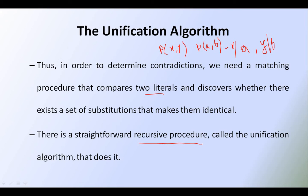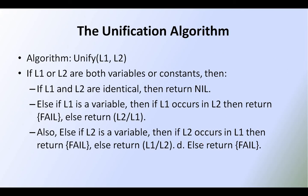This is the introduction of the unification algorithm. Now let us see how this algorithm works. The algorithm unifies two literals L1 and L2. Taking P of X comma Y as L1 and Q of X comma Y as L2. If L1 and L2 are both variables and constants — the first rule says: if L1 and L2 are identical, then return nil.